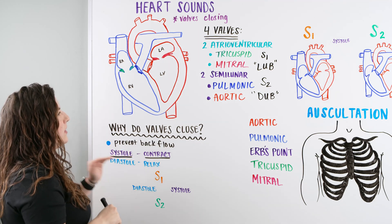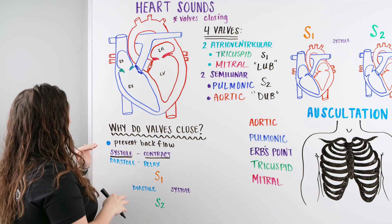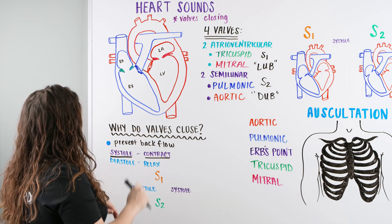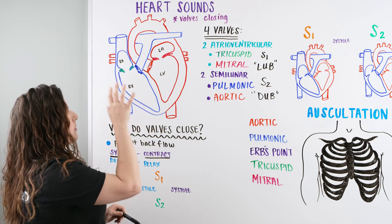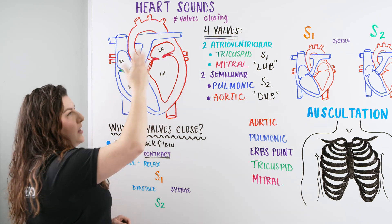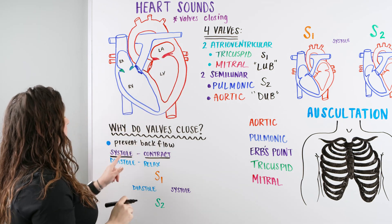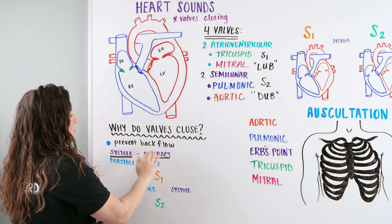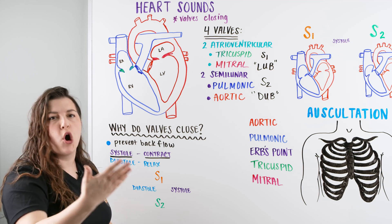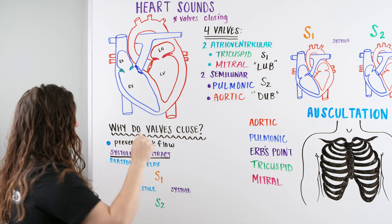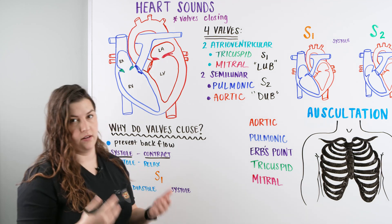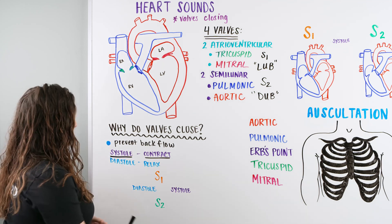We're going to prevent that backflow. We have the words systole and diastole. Systole means contract — you can remember this because asystole means no heartbeat, no contraction. Diastole means relax. These terms play a role within the heart: when we talk about heart valves and sounds, we're talking about things happening within the ventricles — blood going in and filling, and then going out and being ejected.